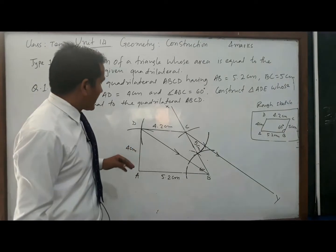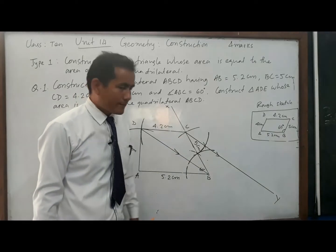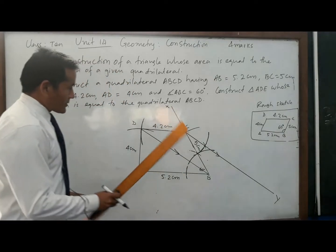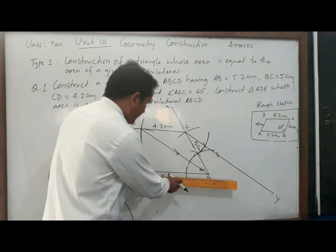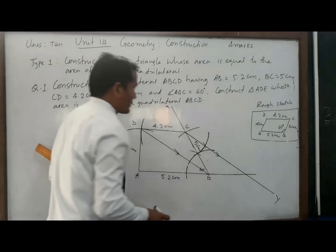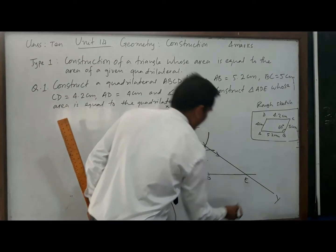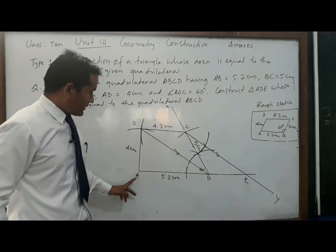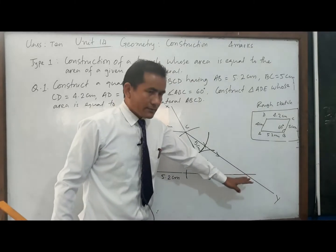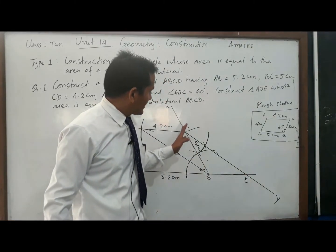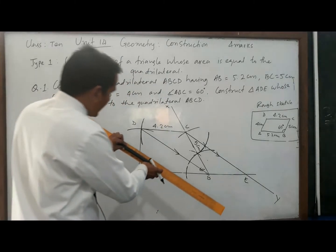After constructing the parallel line CY, produce line AB such that it intersects CY at E. Then join DE.